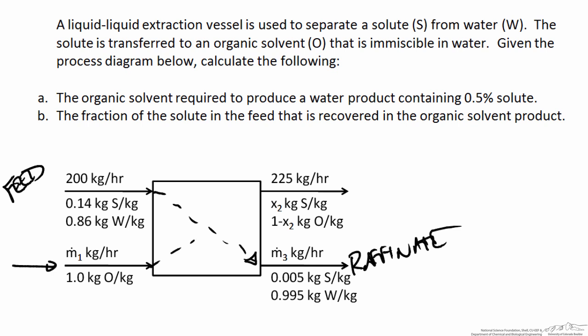The organic solvent is transferred through the extraction vessel and enriched in the solute. The flow rate leaving the process has been given as 225 kg per hour, and we have an unknown composition. Because the organic solvent and water don't mix, we know that we only have two species in this stream. The composition variable of the solute has been given the variable x2, and the composition of the organic solvent is 1 minus x2. The solvent that's been enriched in the solute is known as the extract.